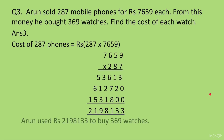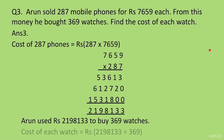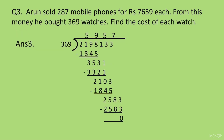Arun used 2198133 to buy 369 watches. So cost of one watch will be 2198133 divided by 369. Cost of one watch is going to be less, so we divide by 369. When you divide, you get the answer as 5957. So cost of one watch is Rs. 5957.